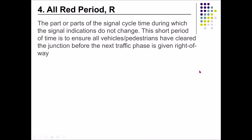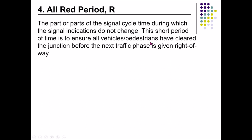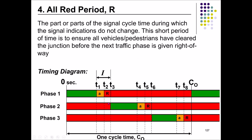Moving on to the all-red period — symbol R (capital R). It is the part of the signal cycle time during which all signal indications show red — all phases, all junctions show red simultaneously. This short period is normally two to three seconds. It exists for safety reasons: to ensure all vehicles and pedestrians have cleared the junction before the next traffic phase is given the right of way, and also to protect red-light runners.